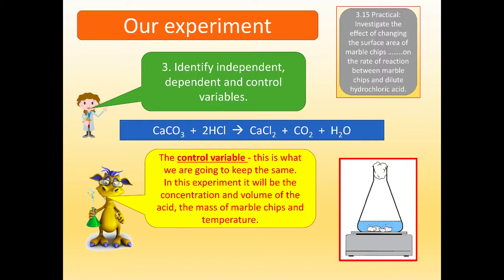Controlled variables are what we're going to keep the same in every single experiment. And here it'll be things like the concentration and volume of acid, the mass of marble chips, and the temperature. So hopefully now you'll understand the independent variable is what you change, dependent variable is what you measure, controlled variables are what you keep the same.